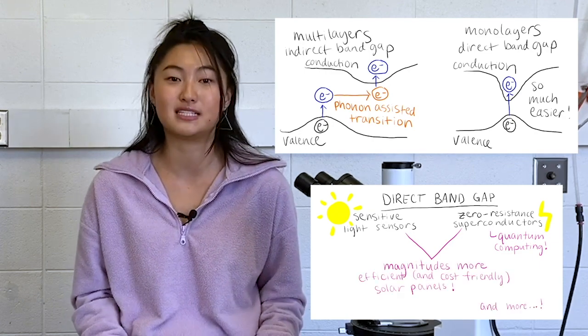In this case, less or thinner really is more. So back to the problem. How do we isolate these monolayers?